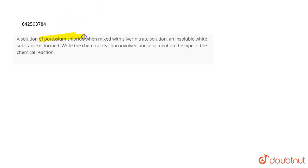The question is: a solution of potassium chloride when mixed with silver nitrate solution, an insoluble white substance is formed. Write the chemical equation or the chemical reaction involved. Also mention the type of the chemical reaction. So according to the question,